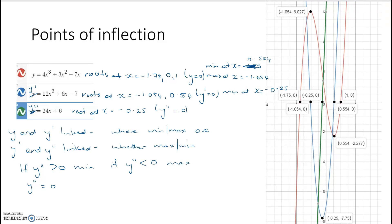Now, look at the graph, look at the green graph, y double dash equals 0, at x is equal to negative 0.25. And if we look carefully, or if we check using some x values, say x equals negative 0.3 and x equals negative 0.2, we can find that this is actually where the concavity or the convexivity changes, and we call this a point of inflection.